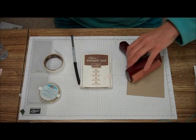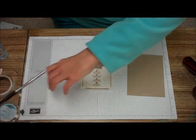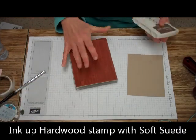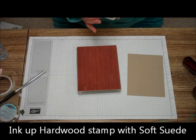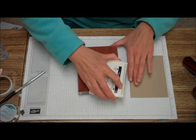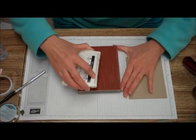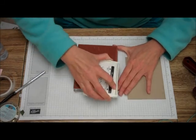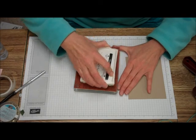So the first thing you want to do is ink up the hardwood stamp. I love this stamp. And you want to make sure the entire stamp is inked.